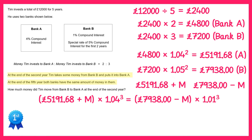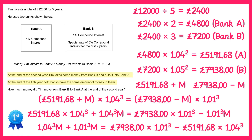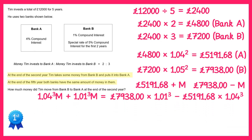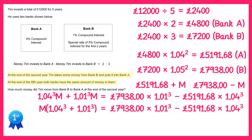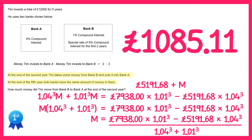Now if we expand the brackets on both sides and collect all terms involving M onto one side, we end up with 1.04 cubed times M plus 1.01 cubed times M equals the remaining terms on the right. We then factorize out M on the left hand side, and divide both sides by what's in the bracket. Typing this all into your calculator gives the answer: M equals £1,085.11.